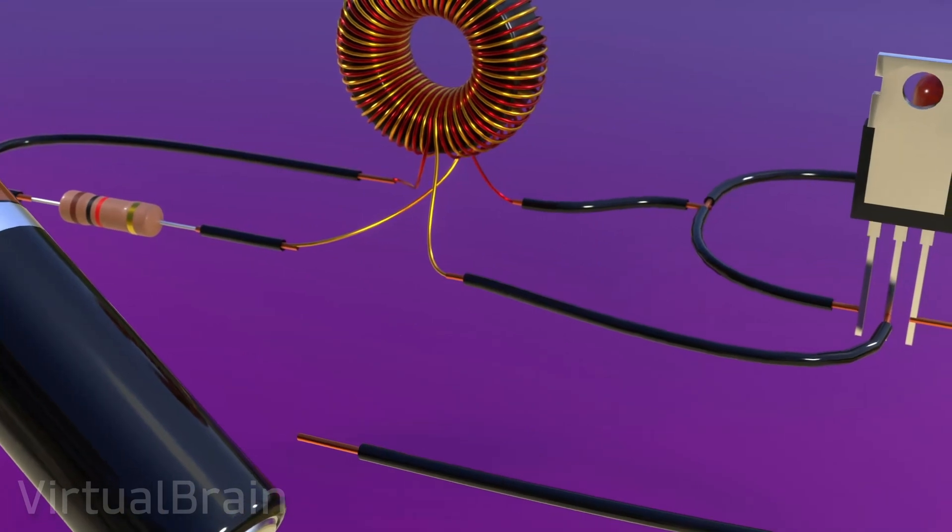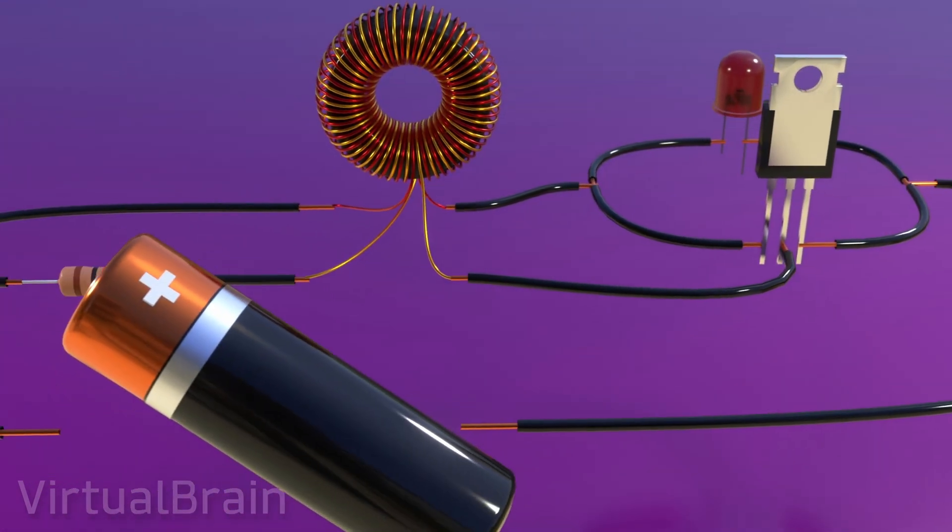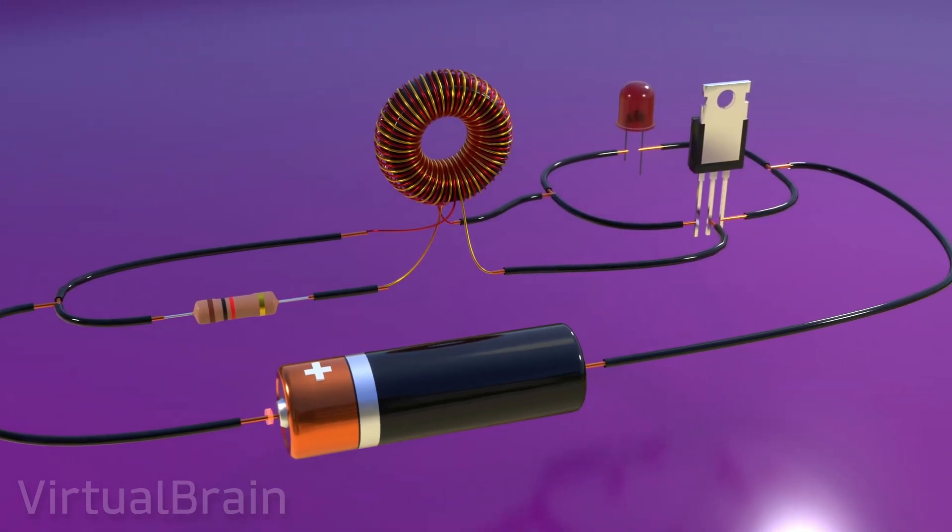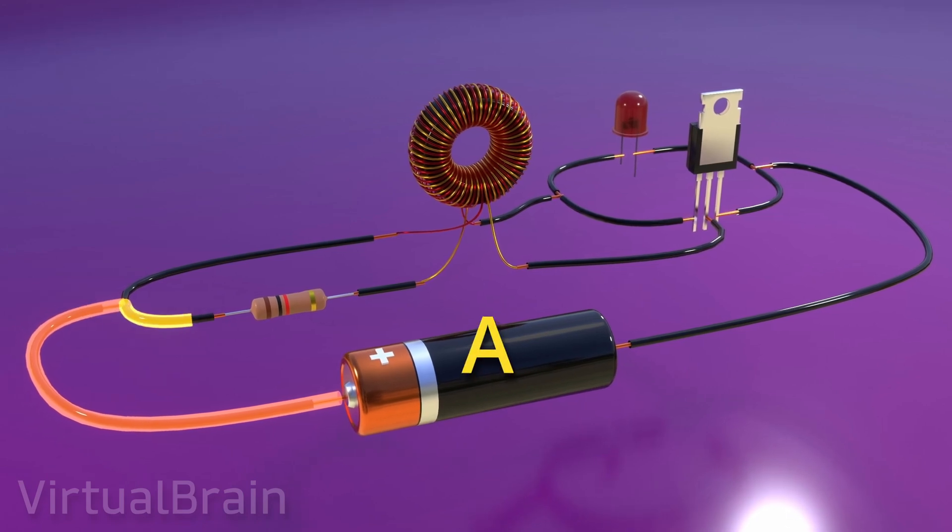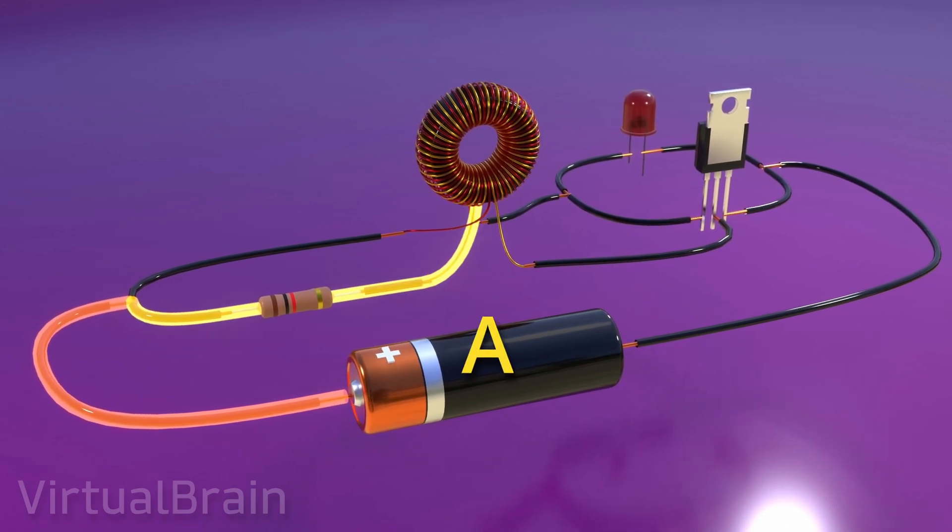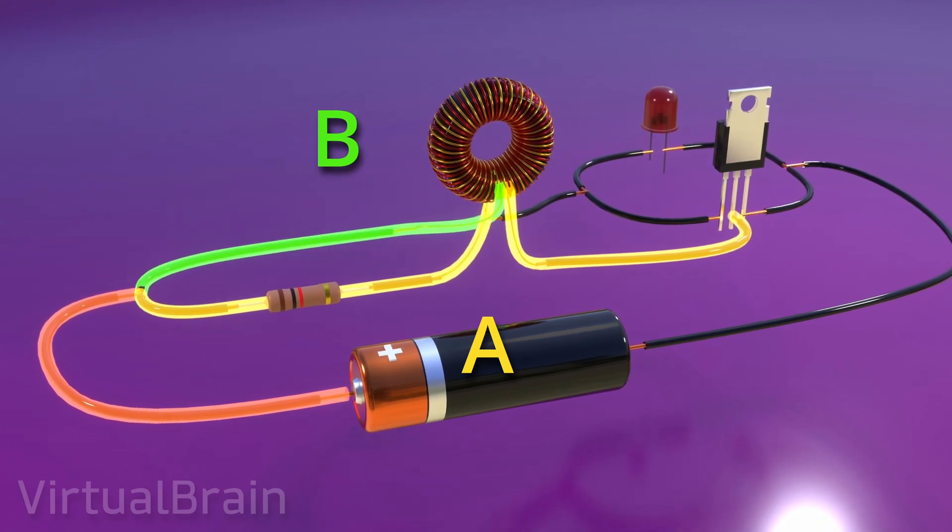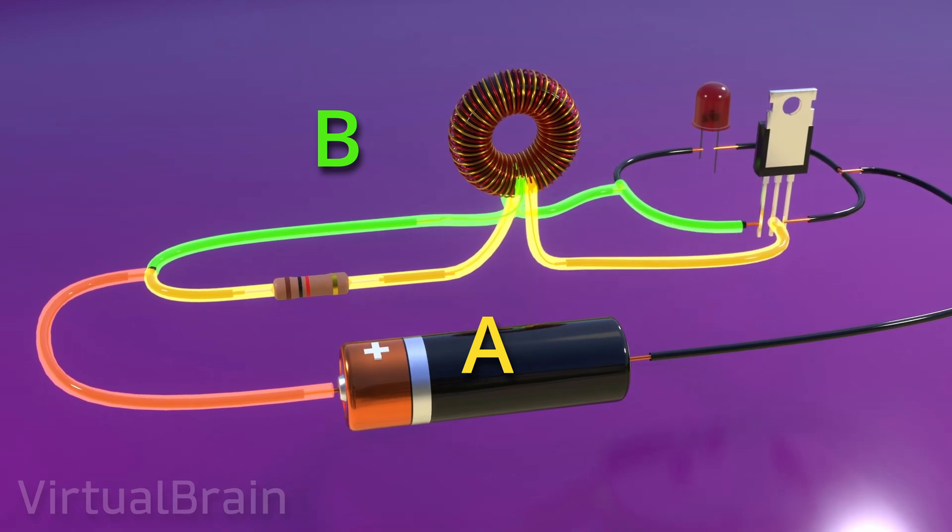Now that we have a better understanding of each component, let's look at how they all work together to create a Joule thief. When connecting a battery and running the circuit, the current could take two possible paths. Path A, which goes through the resistor, the inductor and the base of the transistor, or path B, which goes through the inductor and is further subdivided into two possible options, the collector of the transistor or the LED.